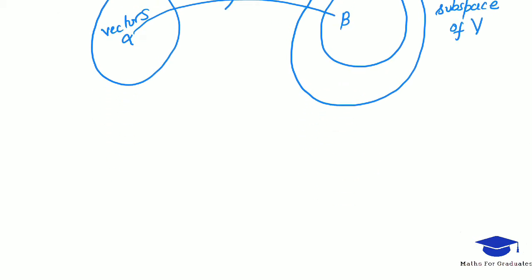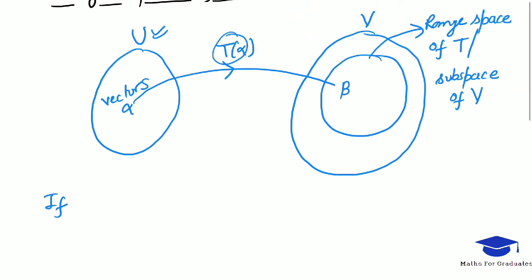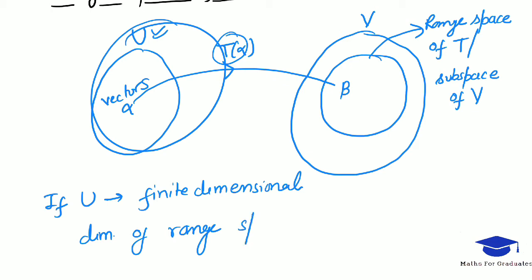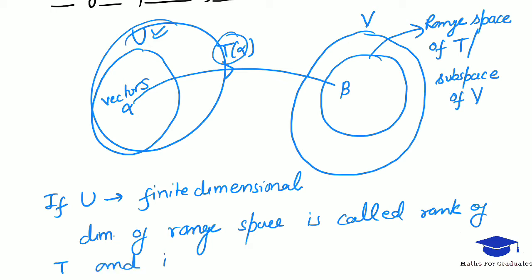And if this vector space U is finite dimensional, then the dimension of the range space is called the rank of T, and it is denoted by rho of T.